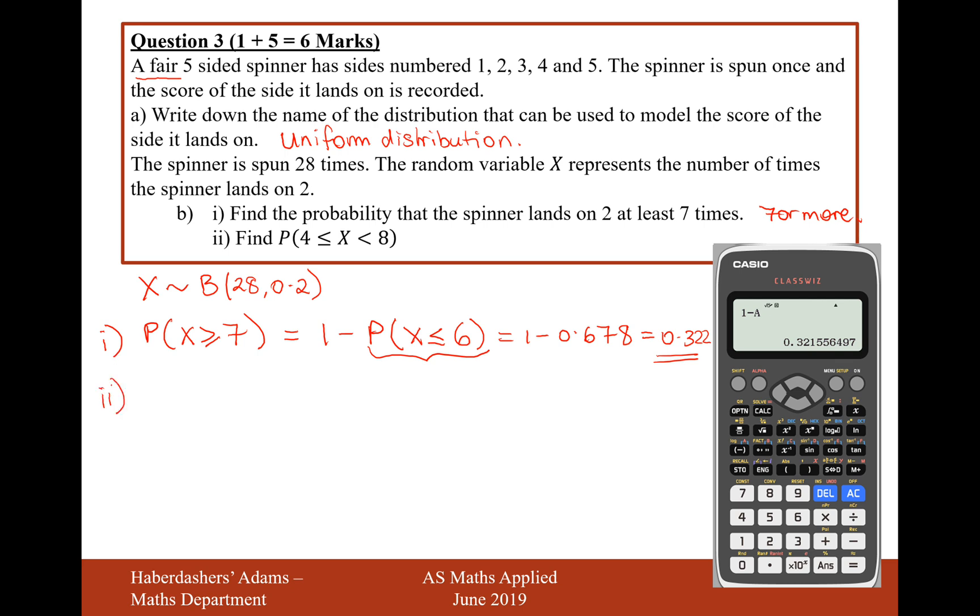Moving on to part II, find the probability that we have a number of successes that is greater than or equal to 4, but less than 8.